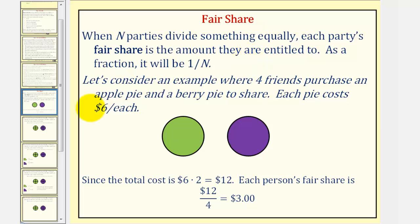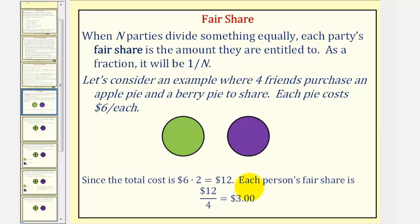Let's consider an example where four friends purchase an apple pie and a cherry pie to share. Each pie costs six dollars, and since the total cost would be six dollars times two, or twelve dollars, and there are four friends, each person's fair share would be twelve dollars divided by four, or three dollars for each friend.